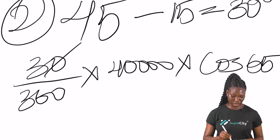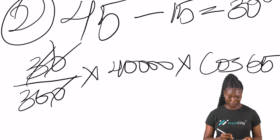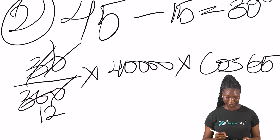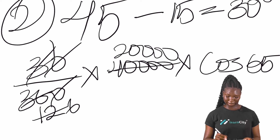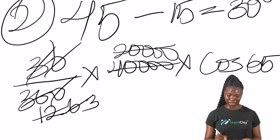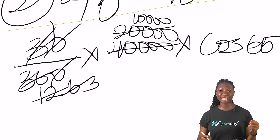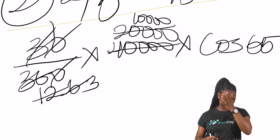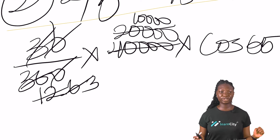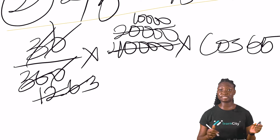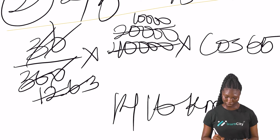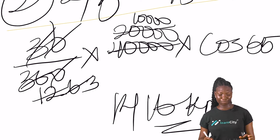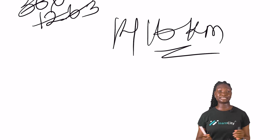Working through the calculation: (30/360) × 40000 × cos 65° simplifies to 10000 × cos 65° / 3, giving us approximately 1416 kilometers for the distance from P to Q.